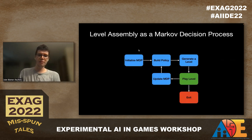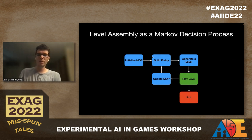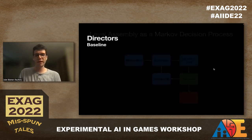As a reminder of the whole system: we initialize the MDP, build the policy, generate a level, the player plays, they can exit or choose to play again, and then we update the MDP if they choose to play again. Now we'll go into the build-a-policy step and look into directors.